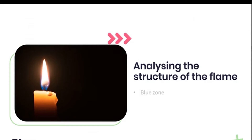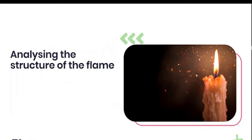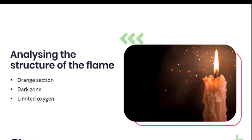When looking at a candle flame closely, you'll notice that the portion lowest on the wick appears blue and is referred to as the blue zone. This area is full of oxygen and this is where your hydrocarbon molecules split into their separate atoms. Just above the blue zone, you'll find a brown or orange section, also known as the dark zone. This area of our flame doesn't contain much oxygen and is where the last of our hydrocarbon atoms break down.